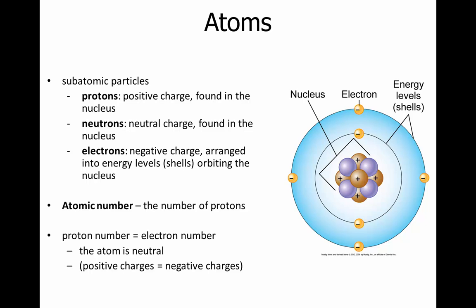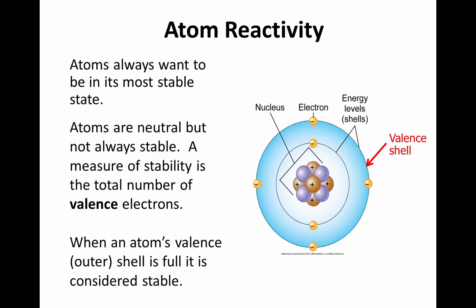Electrons carry a negative charge and are arranged in energy levels, also known as shells, which orbit around the nucleus. The proton number, which is the atomic number, equals the number of electrons, so the atom itself is neutral because the number of positives equals the number of negatives, which cancel each other out. Atoms are neutral but not always stable.